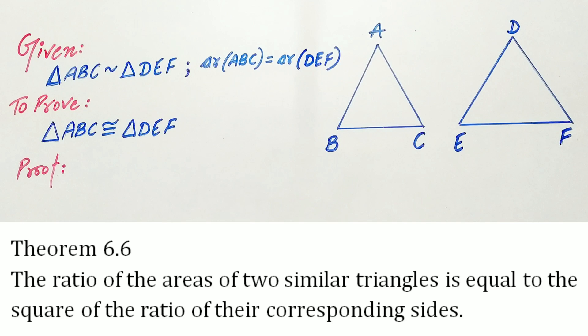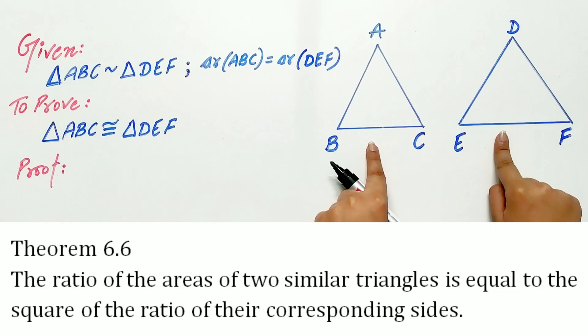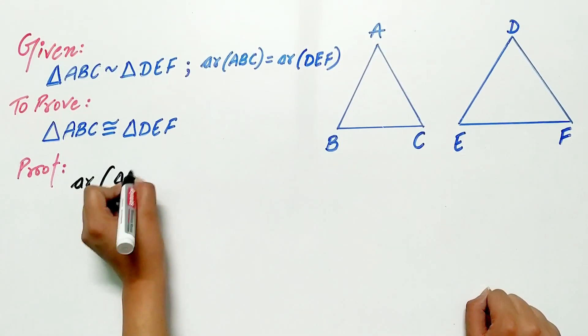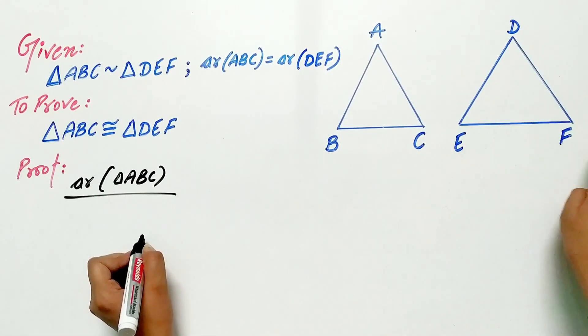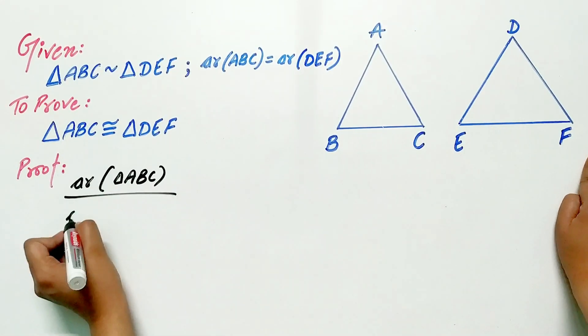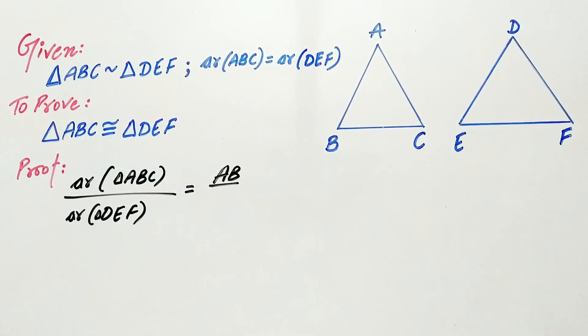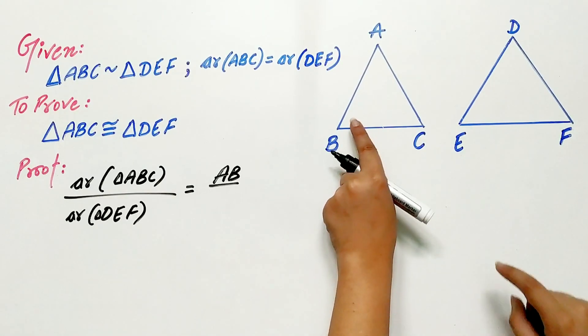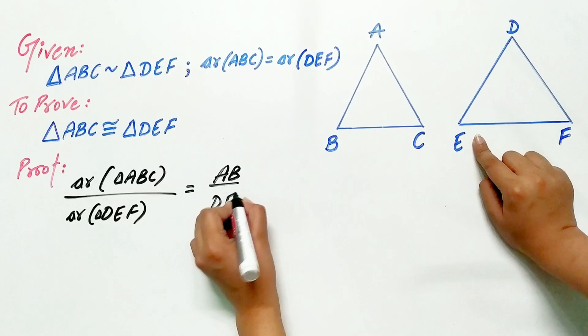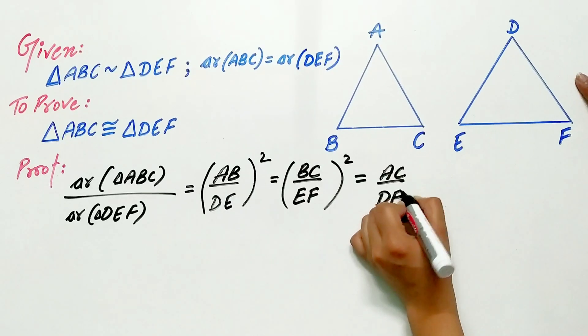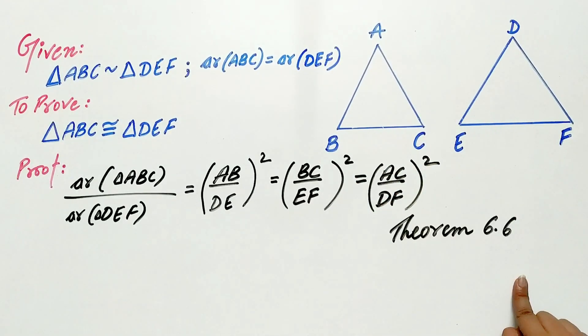Remember theorem 6.6? Theorem 6.6 says, the ratio of the area of two similar triangles is equal to the square of the ratio of their corresponding sides. Hence, area of triangle ABC by area of triangle DEF is equal to the square of the ratio of their corresponding sides. That means AB by DE, BC by EF square, AC by DF square, theorem 6.6.